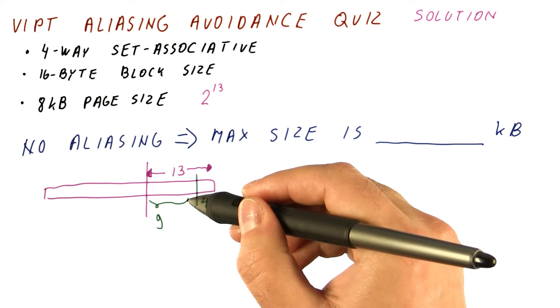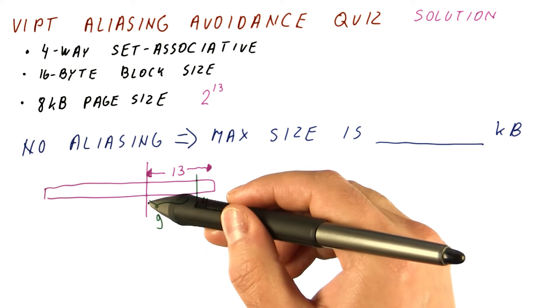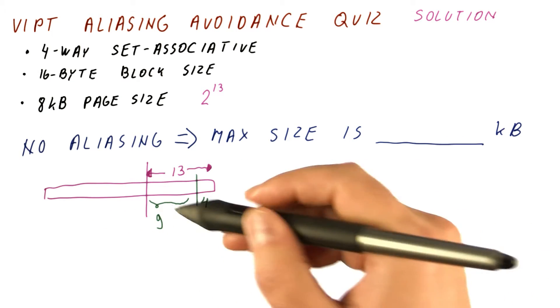We can use fewer, but that would make the cache even smaller. We cannot use more because then we would get aliasing.